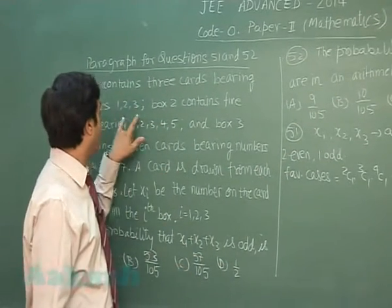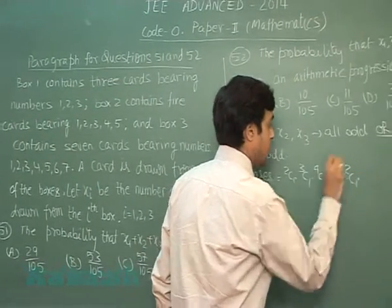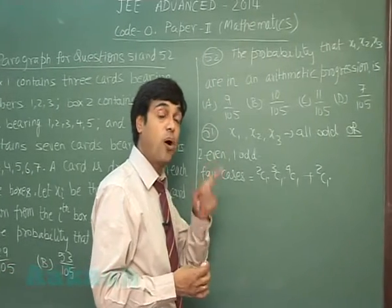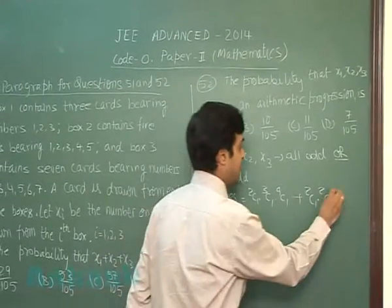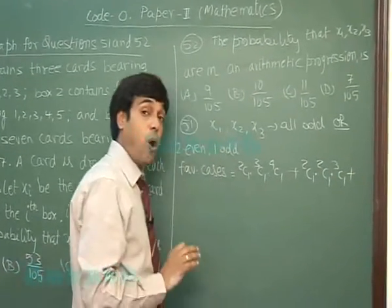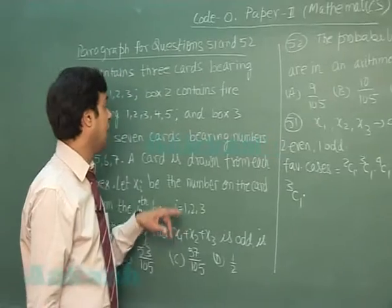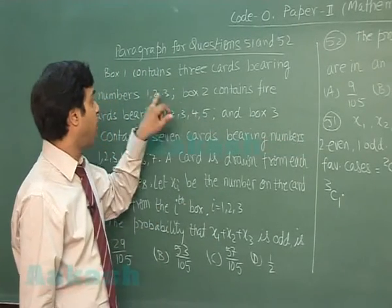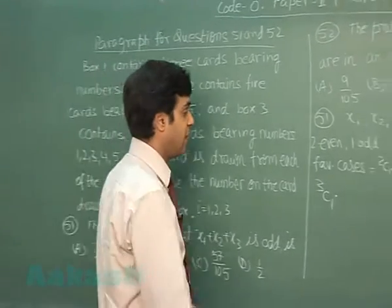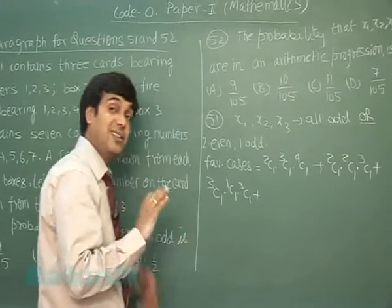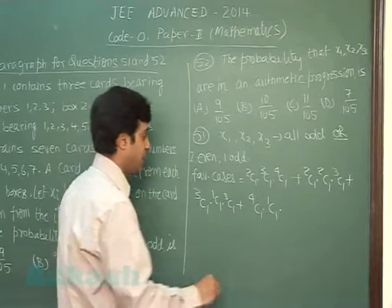For two even and one odd: when box 1 gives odd (2C1), box 2 gives even 2 or 4 (2C1), and box 3 gives even 2, 4, 6 (3C1). Plus when box 2 gives odd (3C1), box 1 gives even (1C1), and box 3 gives even (3C1). Plus when box 3 gives odd (4C1), box 1 gives even (1C1), and box 2 gives even (2C1).